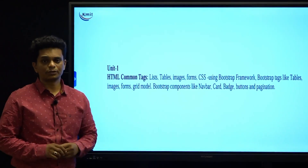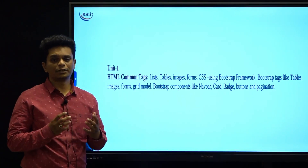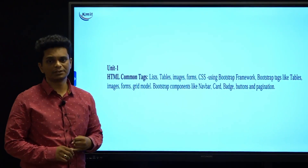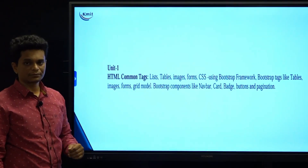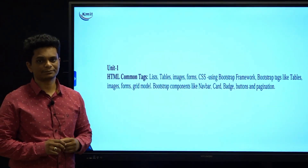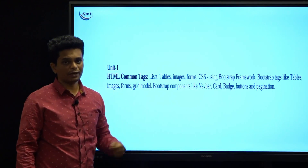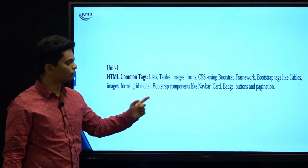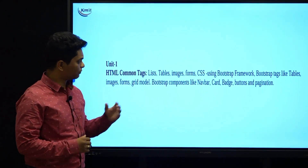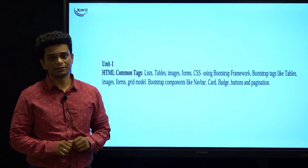Let us start with Unit 1. In Unit 1, we will be dealing with HTML common tags. Later, we will deal with lists, tables, images, and forms. Then we will be working with CSS using the bootstrap framework. Since we have learned bootstrap framework, we will go through bootstrap tags that involve tables, images, forms, and grids. At the end, we will be working with navbar, card, badge, buttons, and pagination.